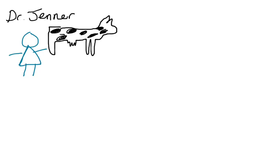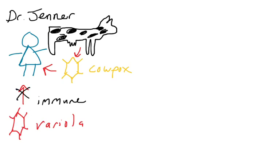Jenner found that milkmaids tended to never get infected by variola virus and never had smallpox. It turns out milkmaids were being exposed to a virus called cowpox. Cows can be infected with cowpox on their udders, and milkmaids, handling the udders, would get cowpox on their skin. Cowpox would form a few poxes on their hands but not cause severe disease. What Jenner noticed was that it made these milkmaids immune to variola virus — infecting humans with cowpox could give somebody protection from smallpox.